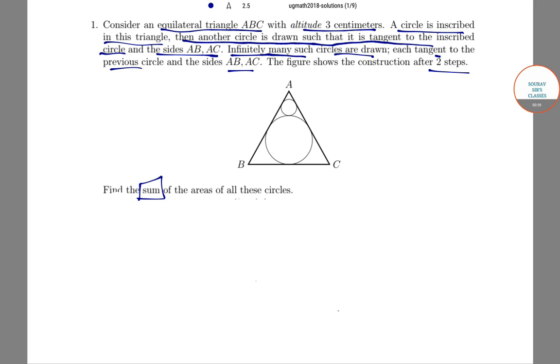The radius of the first inscribed circle is actually 1. It's not hard to see that as you go on inscribing the circles, the corresponding radii decrease by 1/3.